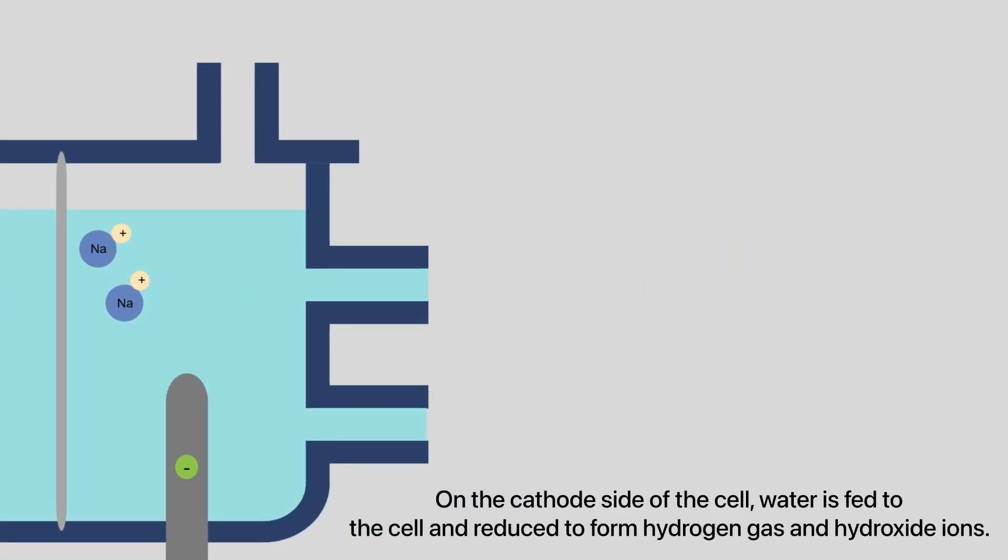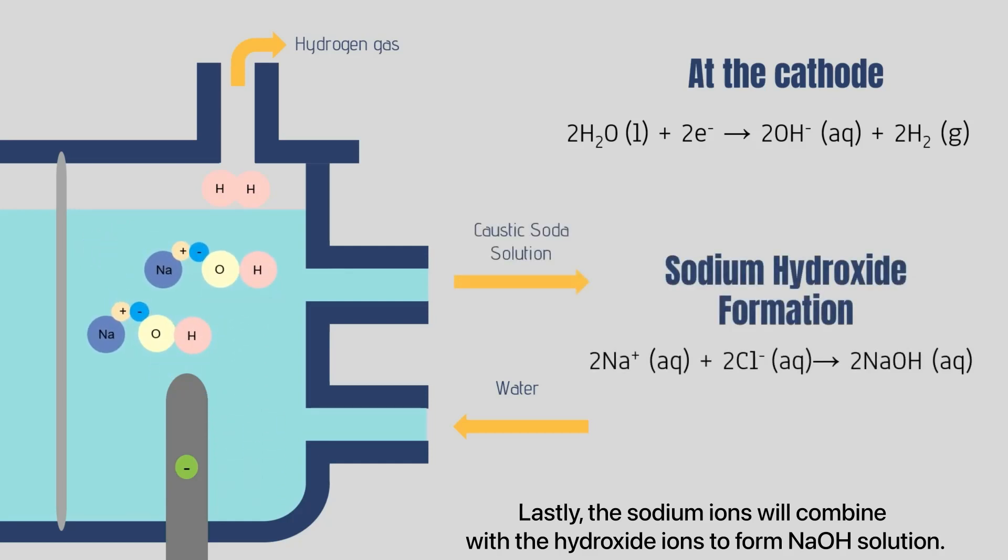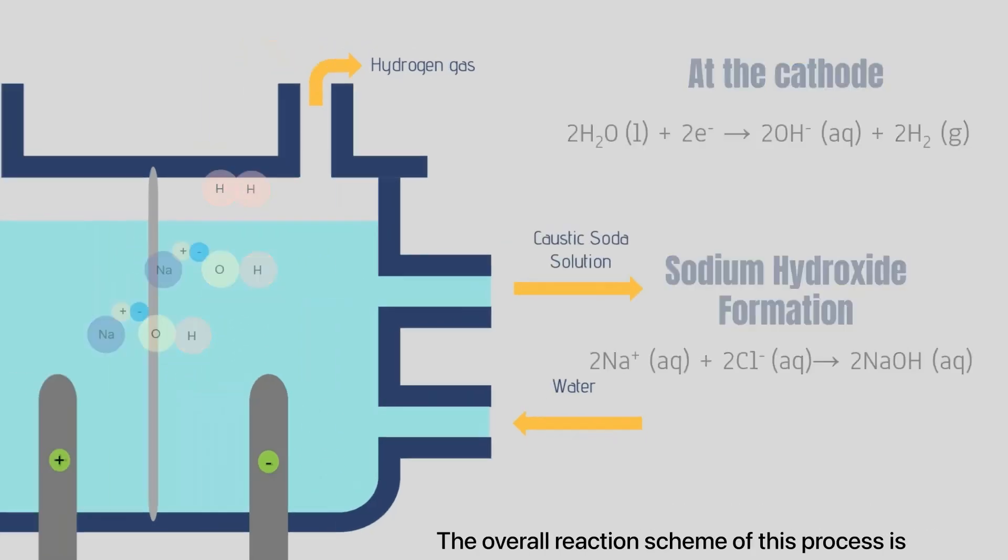On the cathode side of the cell, water is fed to the cell and reduced to form hydrogen gas and hydroxide ions. Lastly, the sodium ions will combine with the hydroxide ions to form NaOH solution.